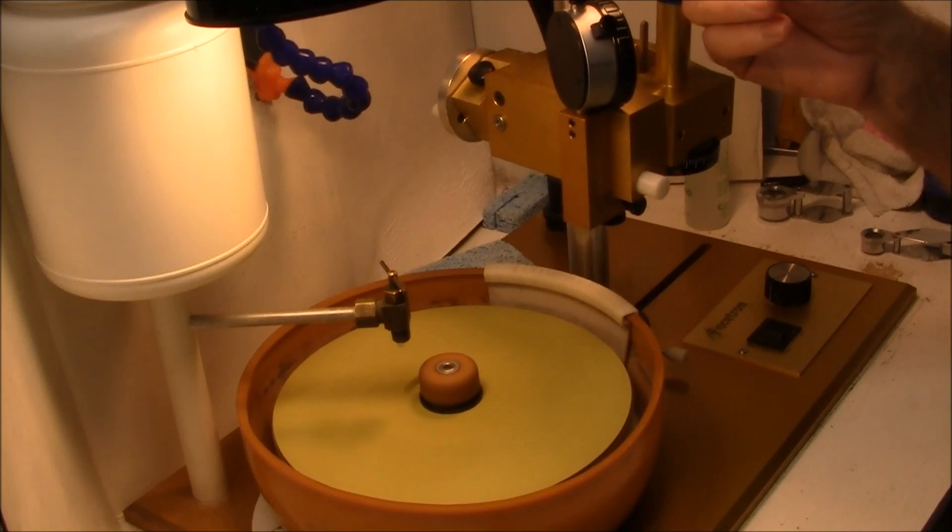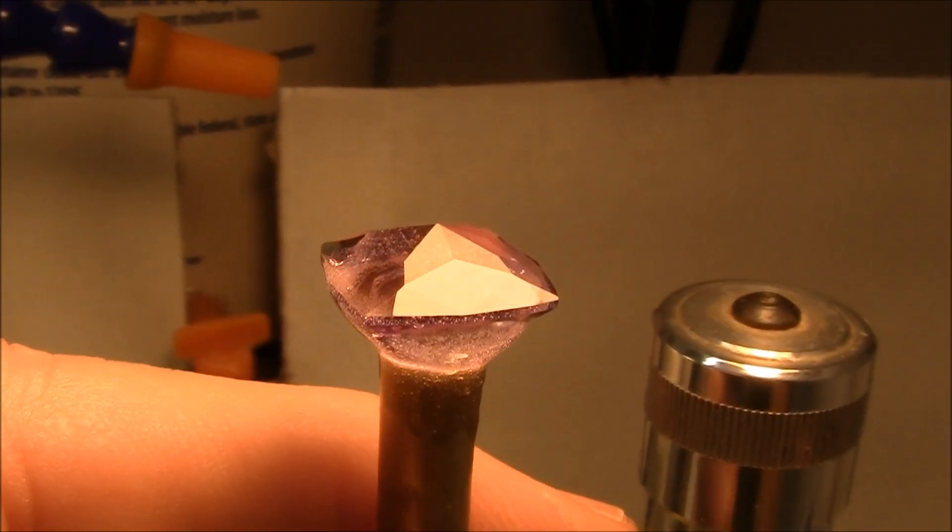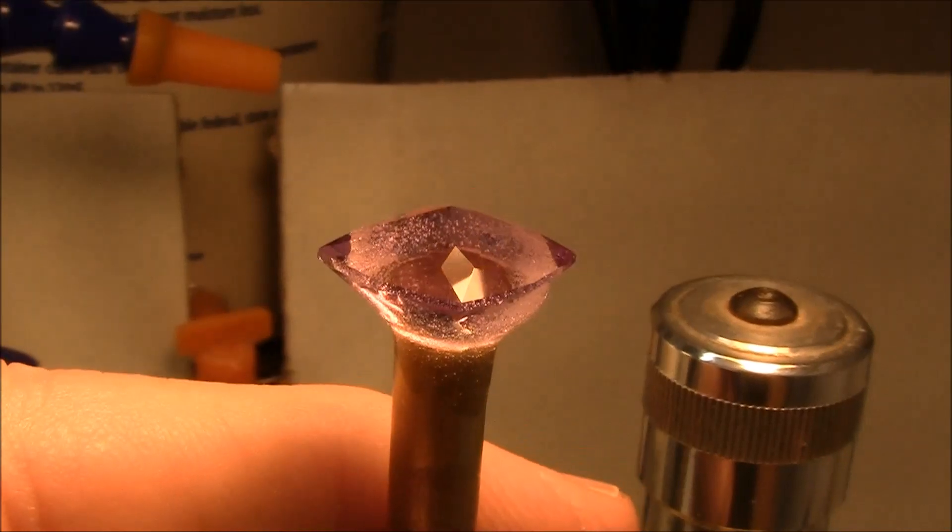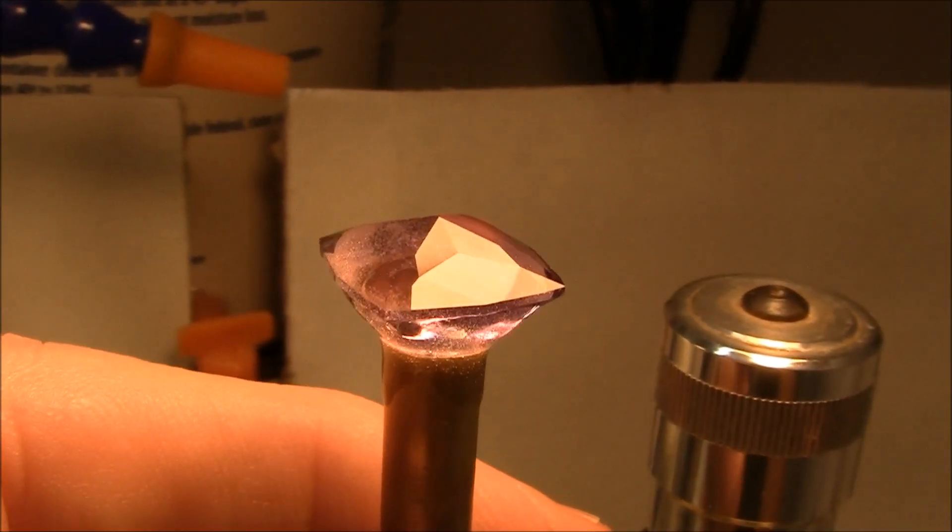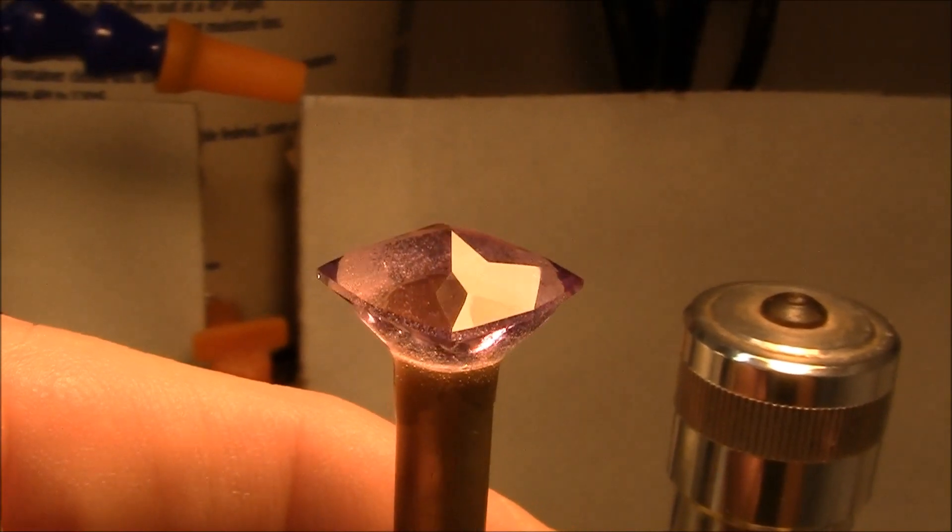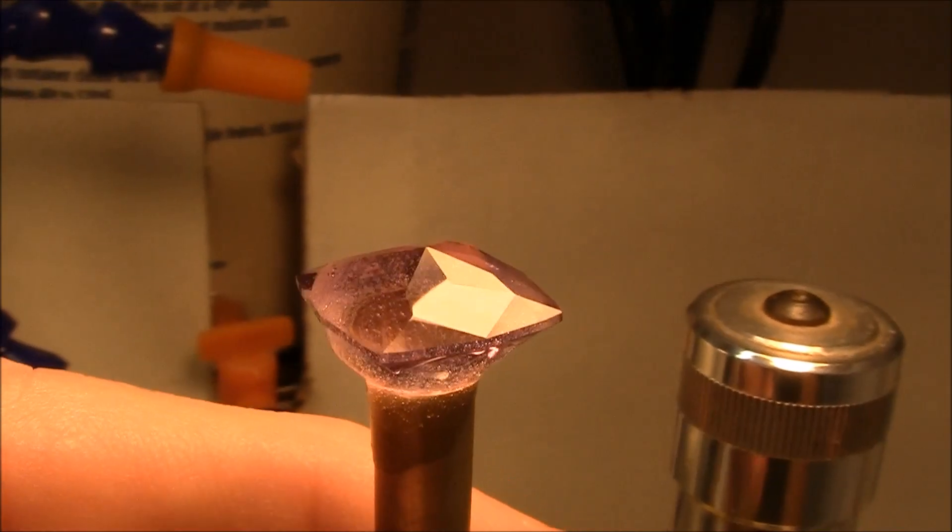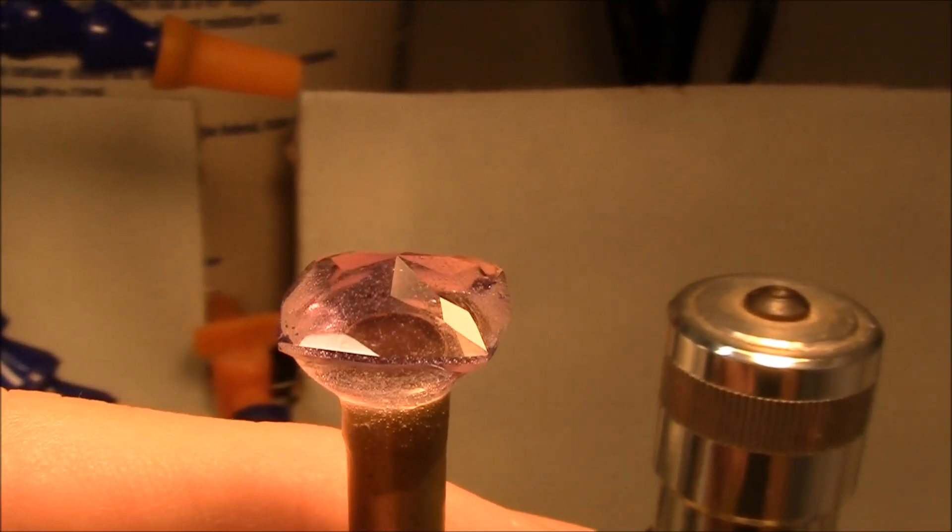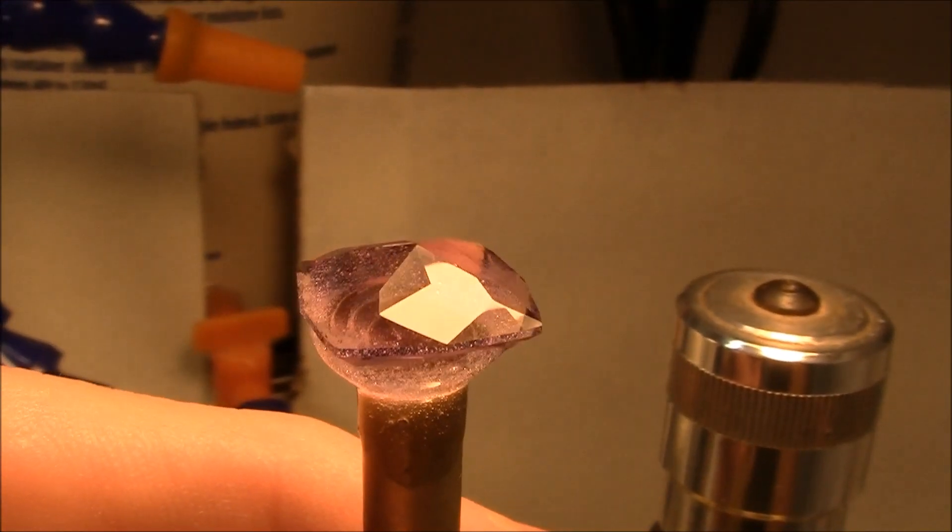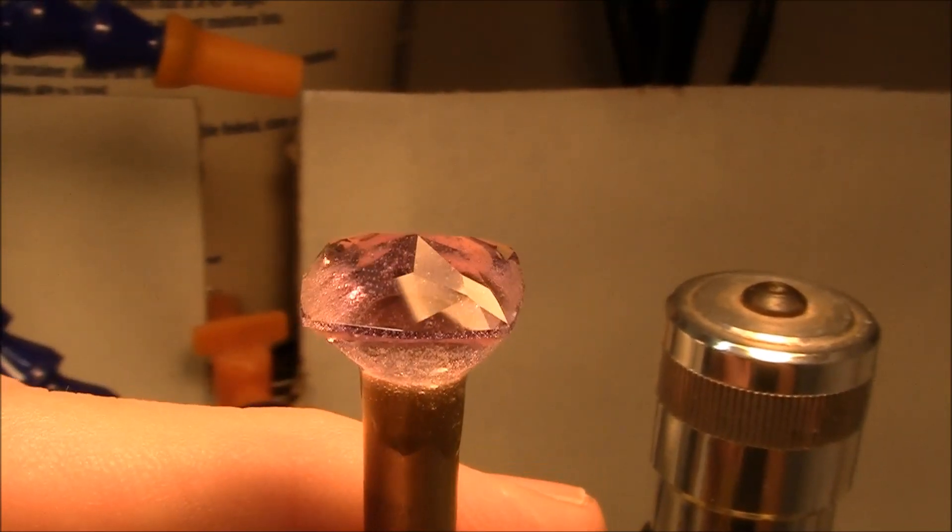I'm now pre-polishing with the 8,000 grit lap. All pre-polishing is complete. The next step will be final polishing using a cerium oxide lap. Then I'll cut the table on the final cutting sequence. The table's always last almost every time.